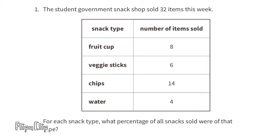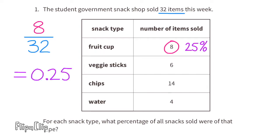There were a total of 32 items sold. Eight of them were fruit cups. Eight divided by 32 equals 0.25, which is 25 percent. So 25 percent of the items sold were fruit cups.